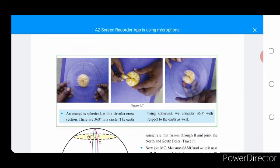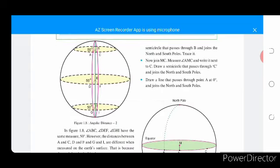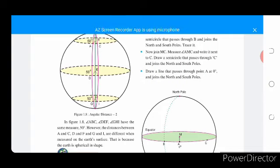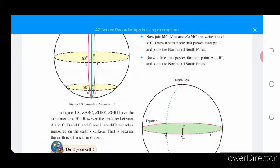The orange is spherical with a circular cross-section. There are 360 degrees in a circle. The earth being spherical, we consider 360 degrees with respect to the earth as well. In figure 1.8, angle ABC, angle DEF, and angle GHI have the same measurement, 50 degrees. However, the distance between A and C, D and F, and G and I are different when measured on the earth's surface.